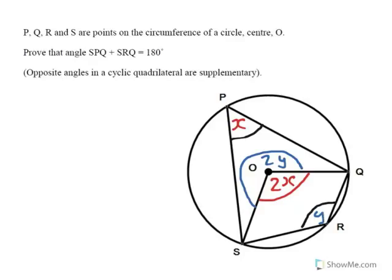Now, at the center O, the two angles 2x and 2y added together make 360 degrees—it's a complete turn.